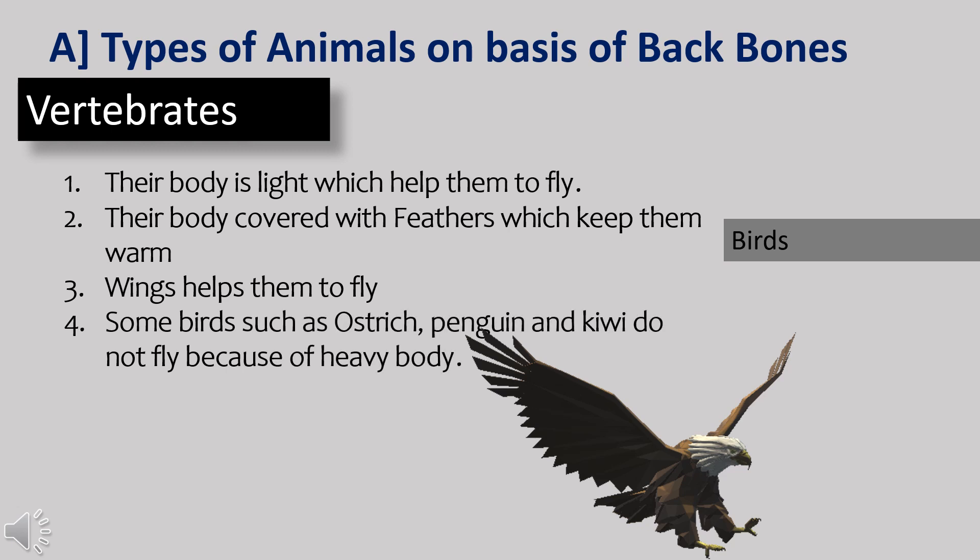Birds have a light body which helps them to fly. Their body is covered with feathers which keep them warm. Wings help the birds to fly. Sparrow, crow and eagle are birds. Some birds such as ostrich, penguin and kiwi do not fly because of their heavy body and are called flightless birds.